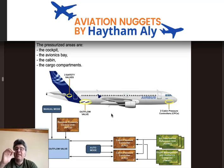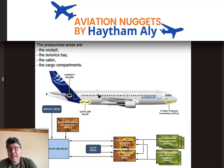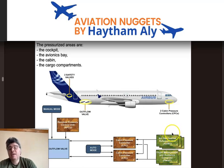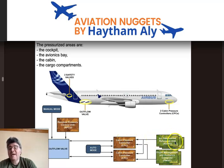The single aisle family is designed for the cabin to reach 8,000 feet normally. For the cabin pressure controller to control the outflow valve automatically, it must receive data from the Air Data Inertial Reference Unit (ADIRU) and from the Flight Management and Guidance Computer (FMGC). The ADIRU provides aircraft altitude to the cabin pressure controller.